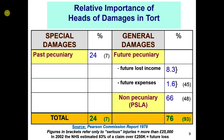Look at these figures. Special damages — your past pecuniary losses — account for about a quarter, around 24%, of total damages in tort. General damages are far more important, making up three-quarters of total damages. Future pecuniary loss — your future lost income — is relatively small at 8.3%, and future expenses are 1.6%. Put together, that's about 9.9%, almost 10%, for future pecuniary loss.